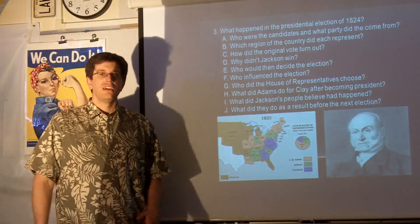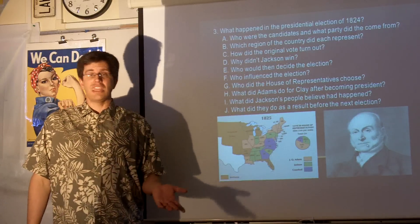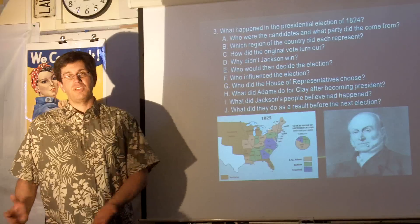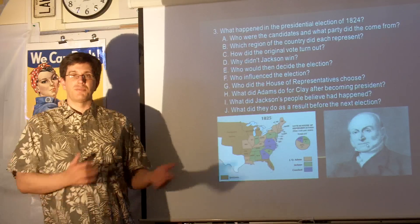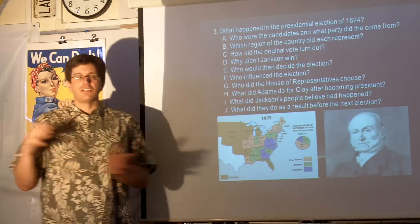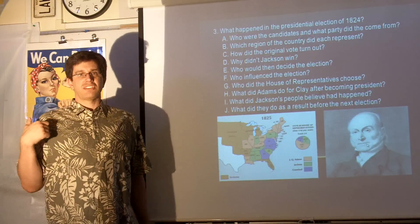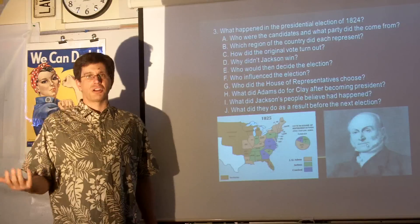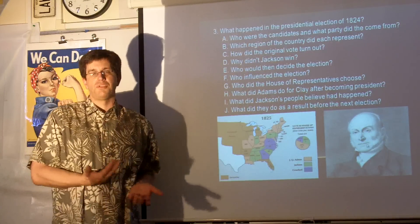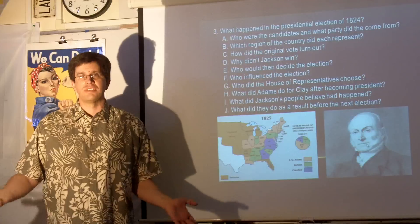Subsequently, Adams made Henry Clay the Secretary of State, who was eminently qualified for the job. And previous to this time, almost every president had been the Secretary of State before going on to be president. Jackson was furious and called it a corrupt bargain — Clay had given his support in exchange for the plum job, which probably meant he was going to be president next.